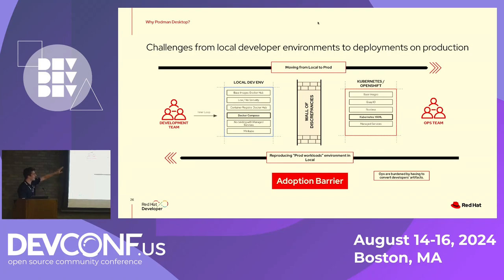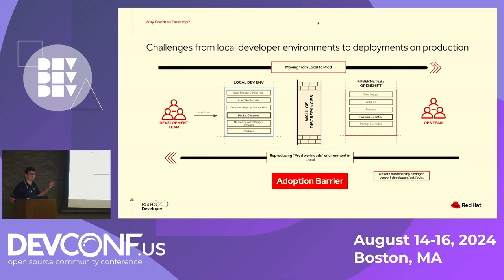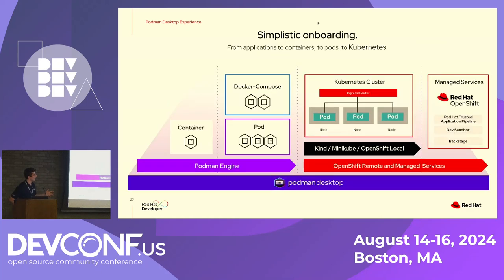Say I'm working in my inner loop — building, testing, debugging my application. I might be working with different base images from Docker Hub that have little to no security, working with Docker Compose to get everything working on my machine. But when I throw that artifact over to the operations team, they have to work with their own curated base images in a rootless fashion with Kubernetes YAML. With Podman Desktop and Podman, we can work with pods, work with Docker Compose, and it's very easy to translate those pods from my local environment to a production cluster or test things with Kind or Minikube locally.